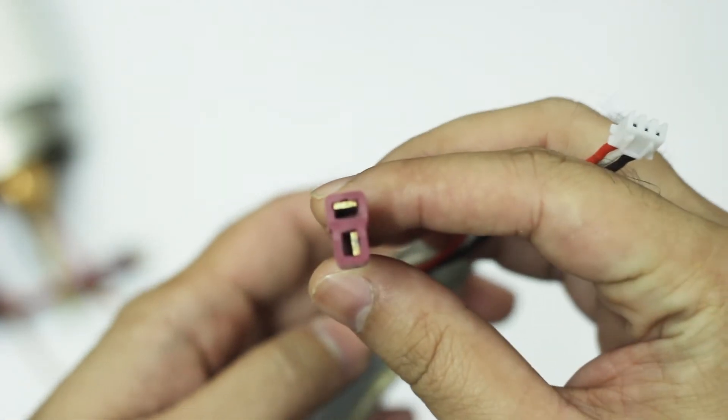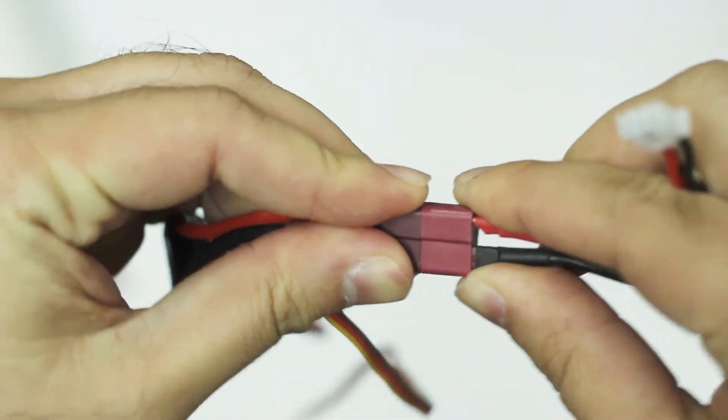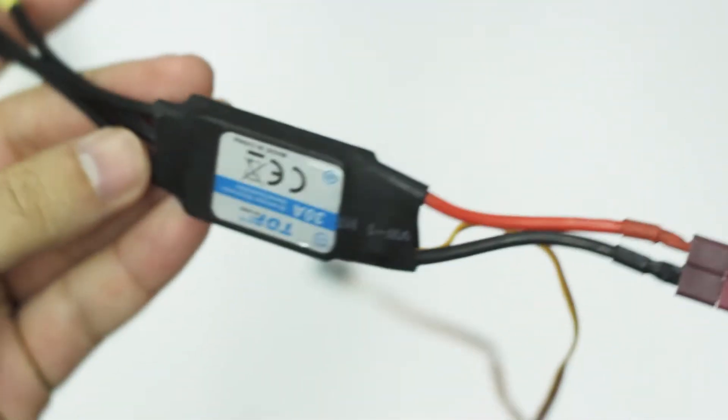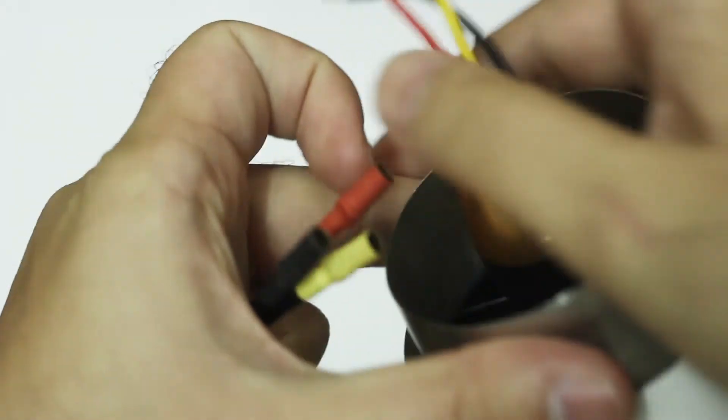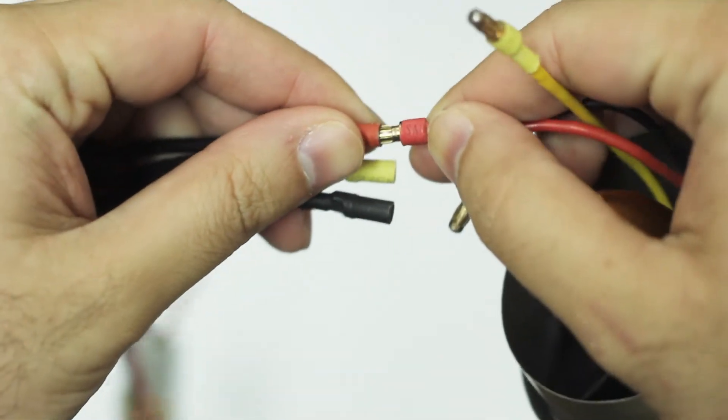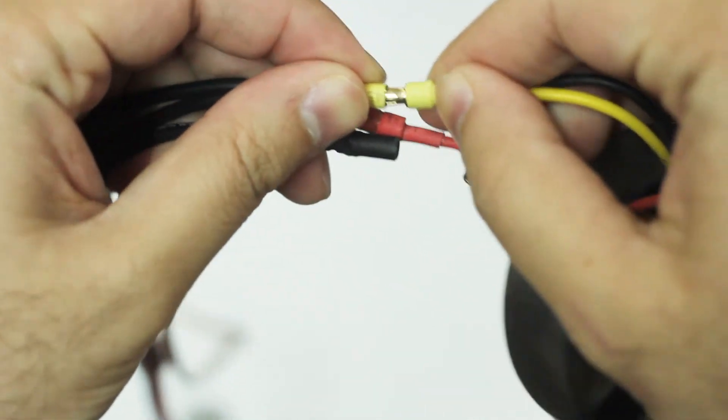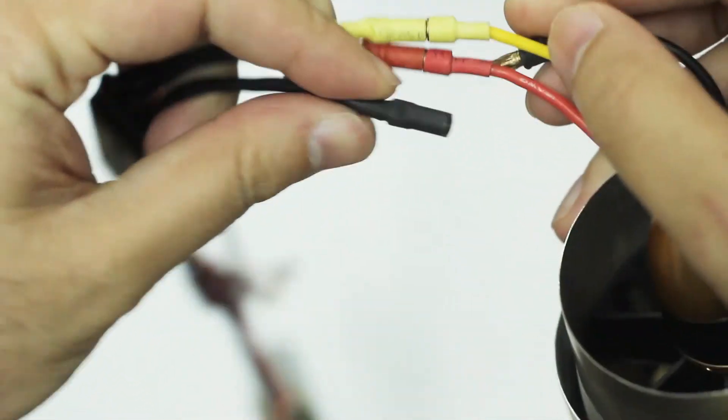So now I will connect my ESC with my battery, and the other end with the three wires I will connect with my EDF unit. This is my EDF unit, so I will connect red with red, yellow with yellow, and black with black.